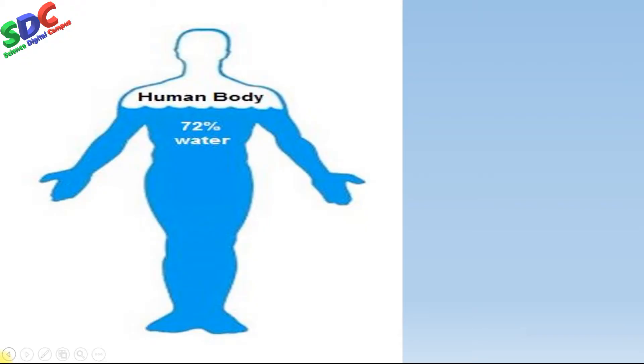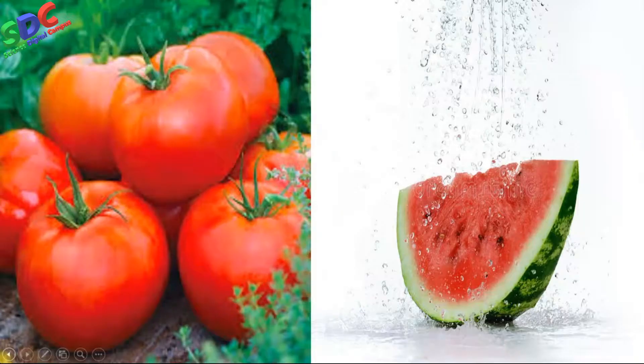Did you know that the bodies of all plants and animals contain water? For instance, the human body contains 70 percent water, tomatoes contain 90 percent water, and the neem tree has about 60 percent water. Thus, water is an essential requirement for all living organisms.